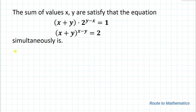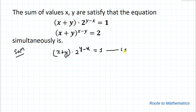Without any delay, let's start the solution. Our first equation is (x plus y) multiplied with 2 to the power (y minus x) equals 1, and our second equation is (x plus y) to the power (x minus y) equals 2.